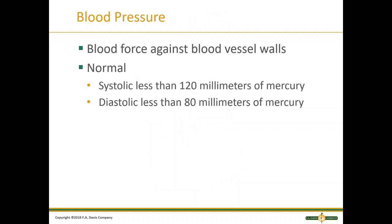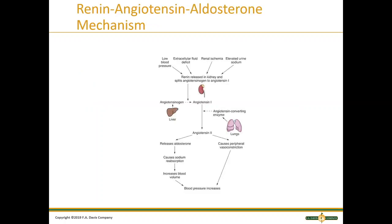Blood pressure is the force of blood against the blood vessel walls. Normal blood pressure is approximately 120 over 80 — a systolic of 120 and diastolic of 80. This is a range and can vary slightly, but 120 over 80 is considered normal for an adult.